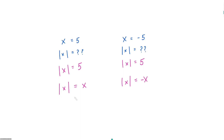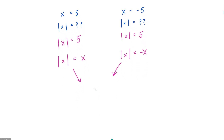If we put these two concepts together, for any absolute value expression, the absolute value of x can only be equal to two things: absolute value of x is either equal to x, or absolute value of x is equal to negative x. Those two values account for 100% of the possibilities for the absolute value of x. The only question left is when is each of these scenarios true?